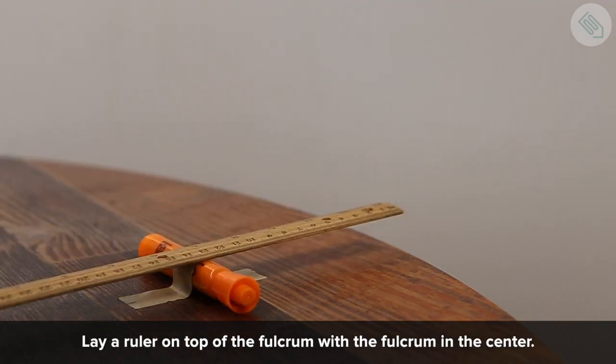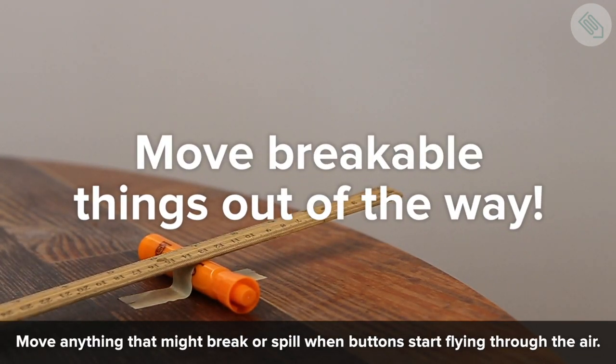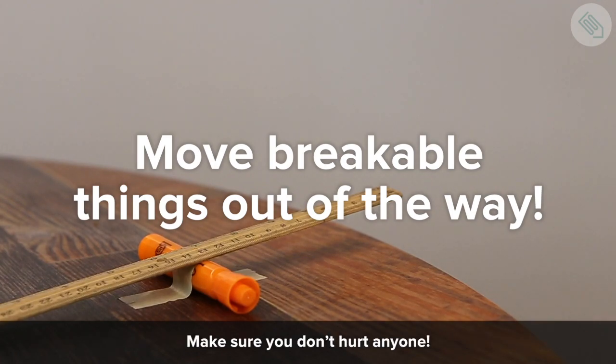Lay a ruler on top of the fulcrum with the fulcrum in the center. Move anything that might break or spill when buttons start flying through the air. Make sure you don't hurt anyone.